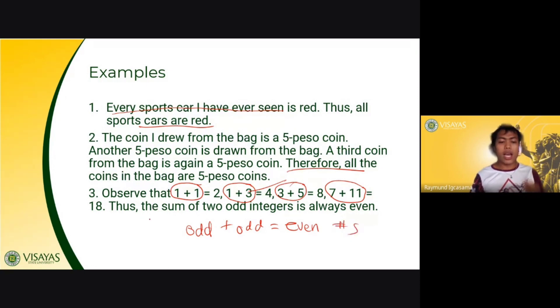So that's what you will state in your conclusion. Thus, the sum of two odd integers is always even, which is true all the time. So you can have 7 plus 17. This is 24. And 24 is an even integer.